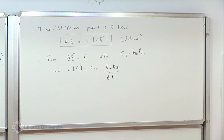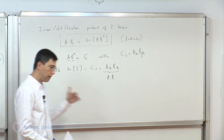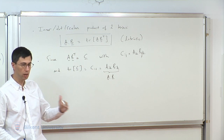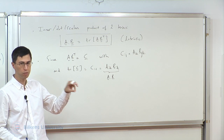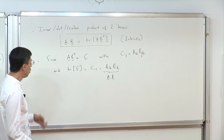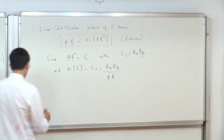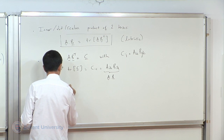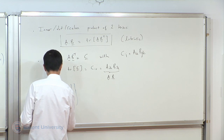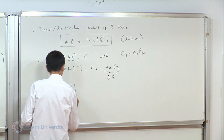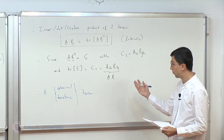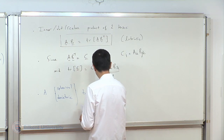Just as when I defined the transpose, I noted that a tensor can equal its transpose — symmetric — or be skew-symmetric, and we can always define symmetric and skew-symmetric parts. Now that I have the trace operator, I can also define the spherical and deviatoric parts of a tensor. First I need to define what a spherical or deviatoric tensor is.